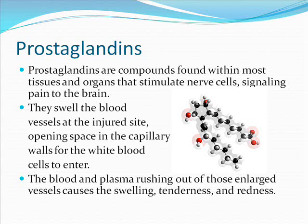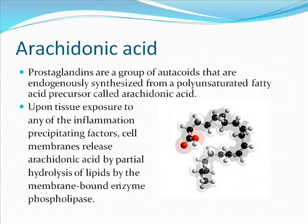The blood and plasma rushing out of those enlarged vessels causes the swelling, tenderness, and redness. Prostaglandins are a group of autacoids that are endogenously synthesized from a polyunsaturated fatty acid precursor called arachidonic acid. Upon tissue exposure to any of the inflammation-precipitating factors, cell membranes release arachidonic acid by partial hydrolysis of lipids by the membrane-bound enzyme phospholipase.